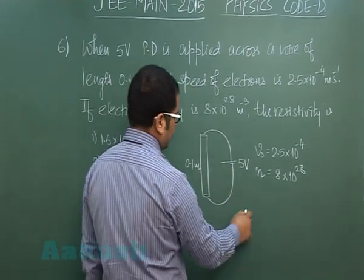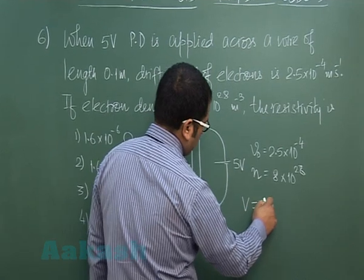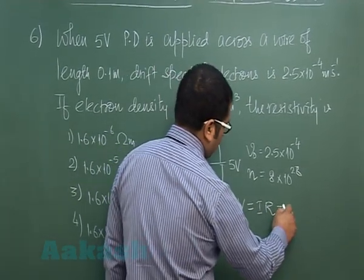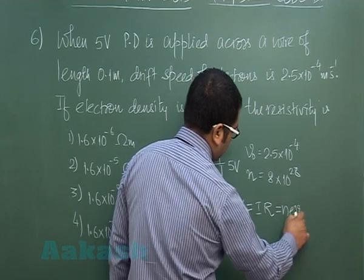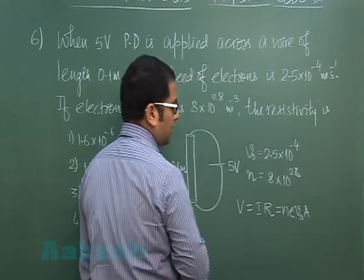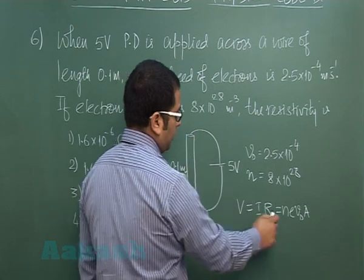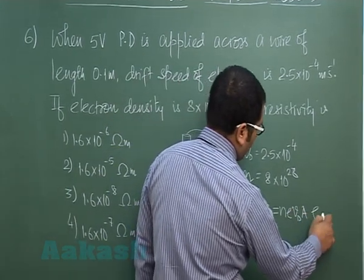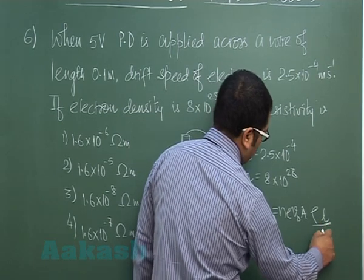First of all we can see V comes out to be I times R and the current can always be related in this way N E V D times A where A is the cross sectional area rest all the symbols have the usual meaning R is rho resistivity L by A.